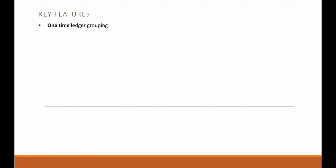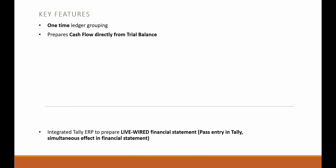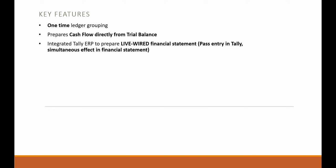You need to do a one-time ledger grouping. It is going to prepare a cash flow directly from a trial balance. It is integrated with daily ERP — you just need to pass an entry in daily and the simultaneous effect is going to come in the financial statement with just the click of one button.